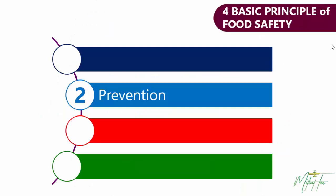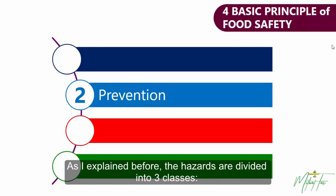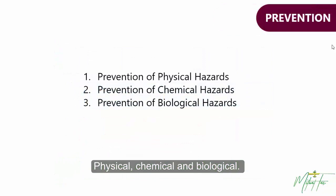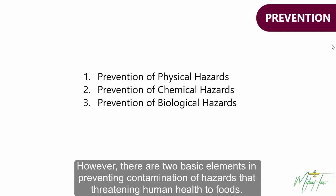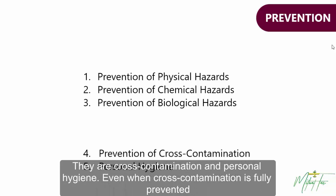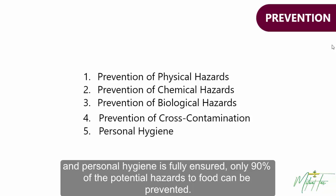Prevention of Foods. In this section, we will learn how to prevent food contamination from the hazards we detect. As explained before, the hazards are divided into three classes: physical, chemical, and biological. There are two basic elements in preventing contamination of hazards that threaten human health to foods: cross-contamination and personal hygiene. Even when cross-contamination is fully prevented and personal hygiene is fully ensured, only 90% of the potential hazards to food can be prevented.